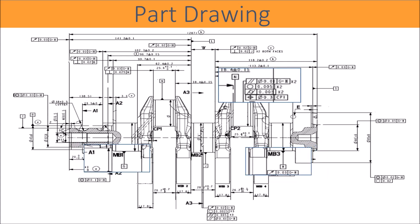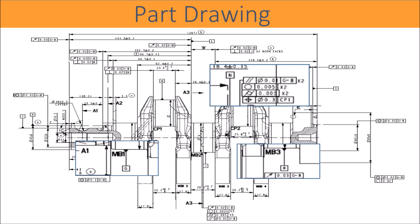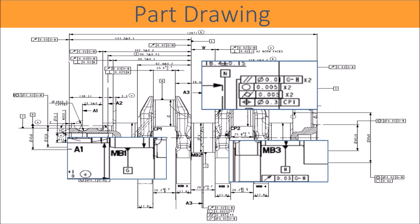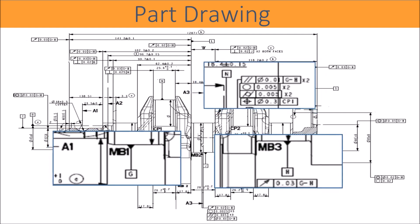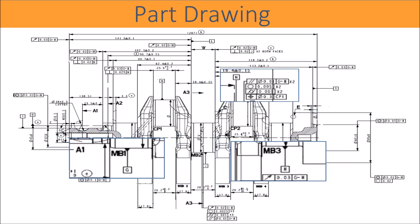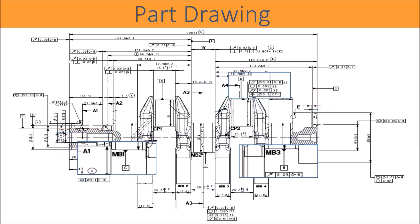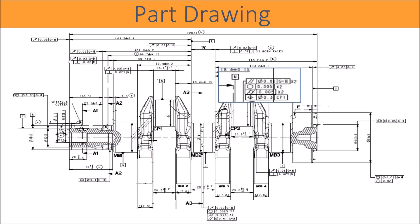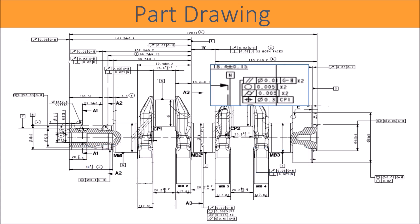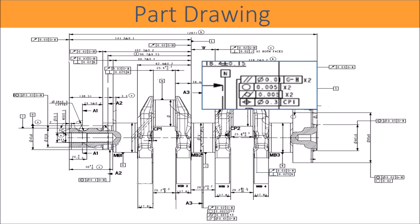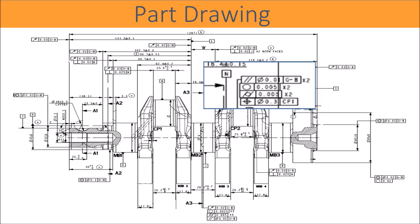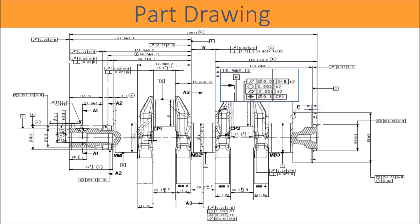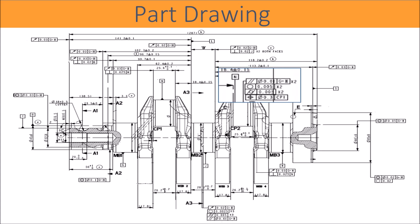For Crank Pin CP2, the measurements to follow are circularity, cylindricity, parallelism, and position. The parallelism is measured with common datum axis GH. The position is measured with the datum of the axis of Crank Pin CP1.